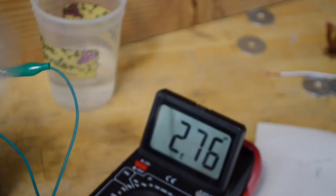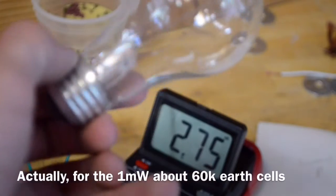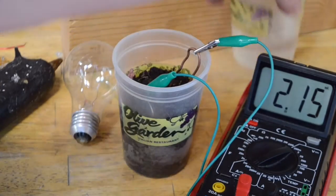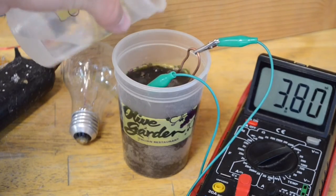So to power this light bulb we would need about 6,000 of these earth battery cells. And you can see how fast the current is dropping. It may just be because the vinegar is running out. Let's try pouring a little bit more in, and it jumped back up.